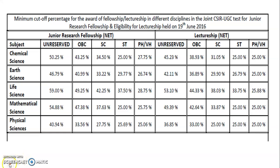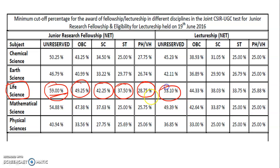For June 2016 life science candidates — where the question paper was considered easy — JRF unreserved was 59%, OBC 49.25%, SC 42.25%, ST 37.50%, and PWD 28%. For lectureship, unreserved was 53.10%, OBC 44.33%, SC 38.03%, ST 33.75%, and PWD 25.88%.